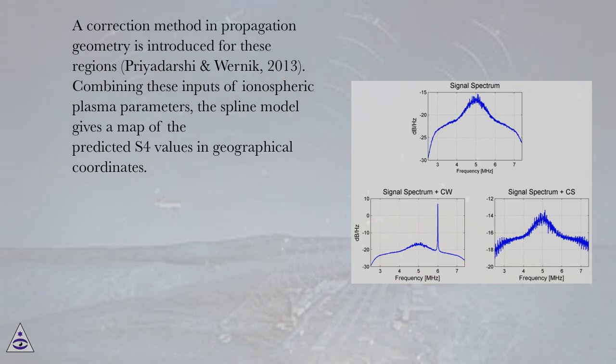Priyadarshi and Wernik, 2013. Combining these inputs of ionospheric plasma parameters, the spline model gives a map of the predicted S4 values in geographical coordinates.